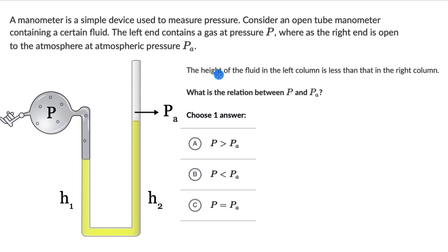And we can see that the height of the fluid in the left column is less than that in the right column. The question is to figure out the relation between P and PA. As always hit pause and try this one on your own first.